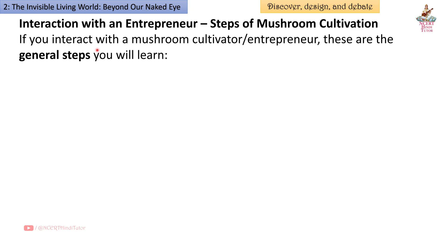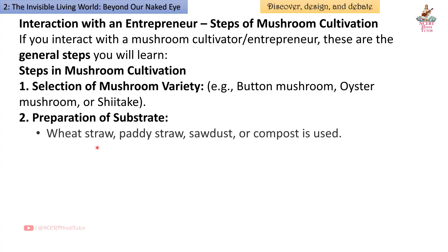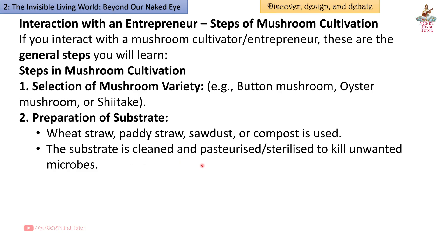Answer: Steps in mushroom cultivation. First — selection of mushroom variety (e.g., button mushroom, oyster mushroom, or shiitake). Second — preparation of substrate: wheat straw, paddy straw, sawdust, or compost is used; the substrate is cleaned and pasteurized/sterilized to kill unwanted microbes. Third — spawn inoculation.